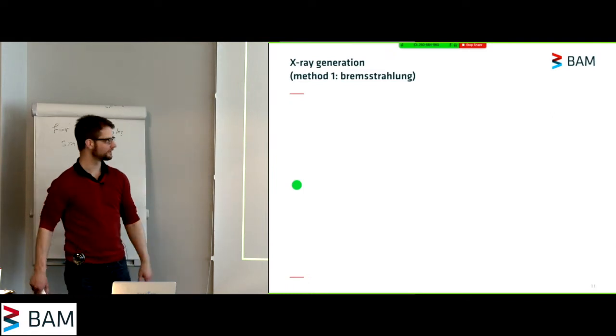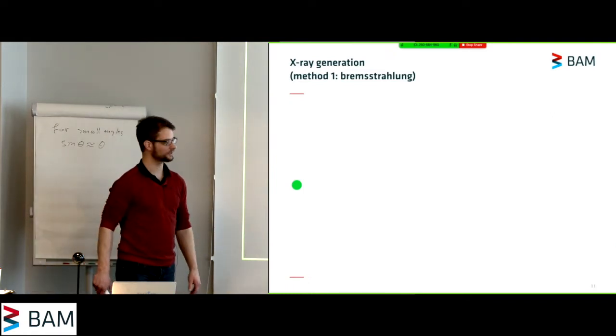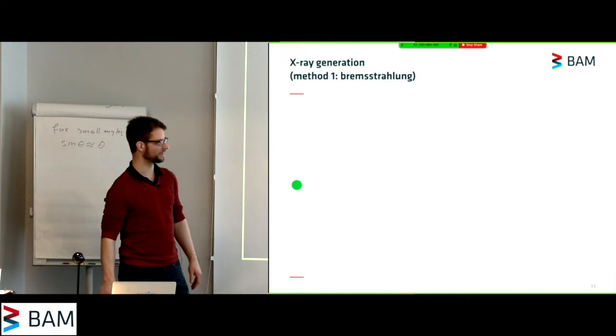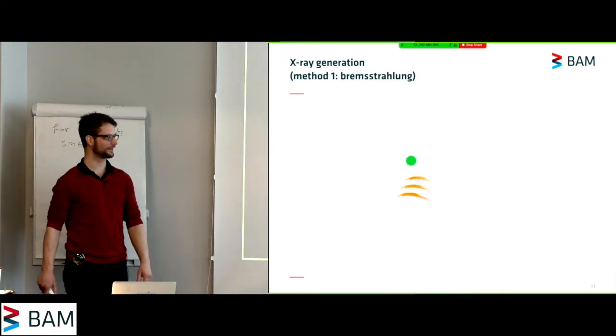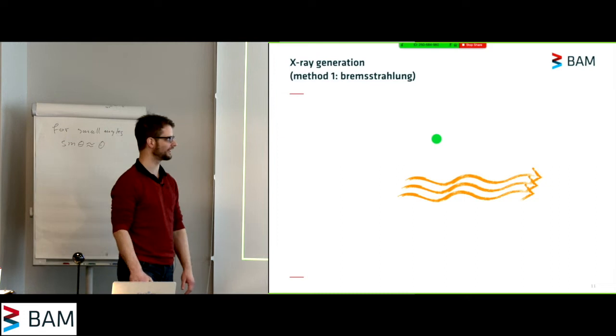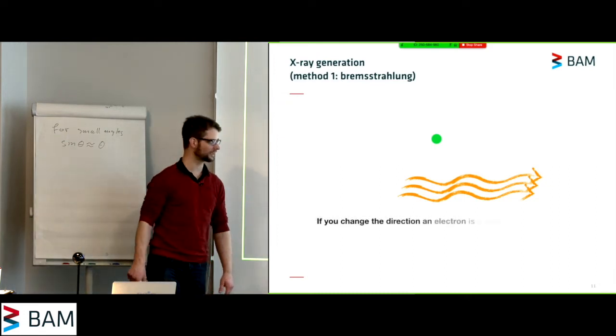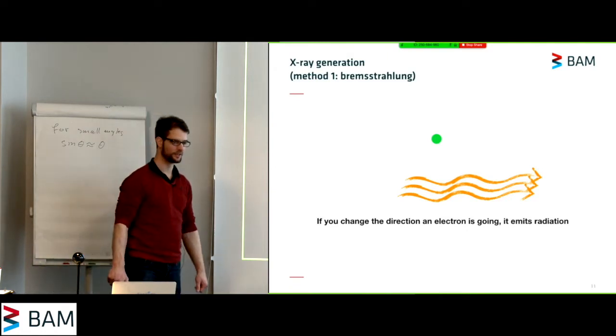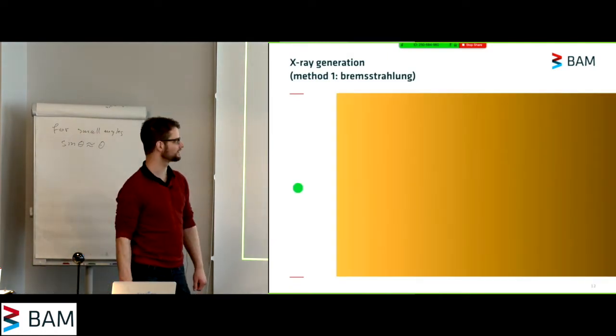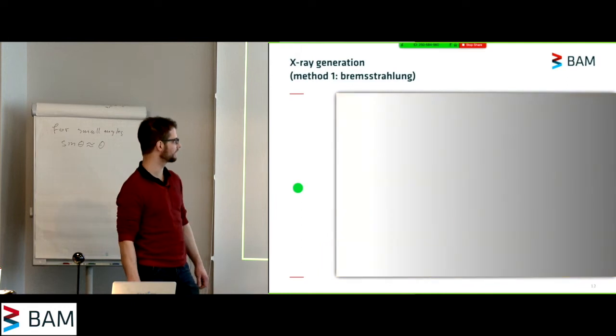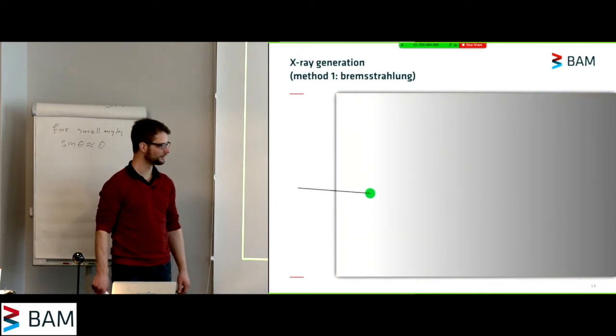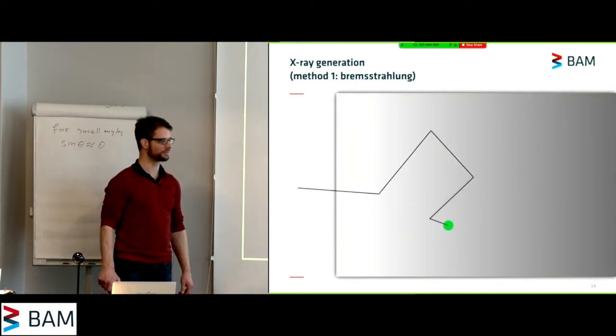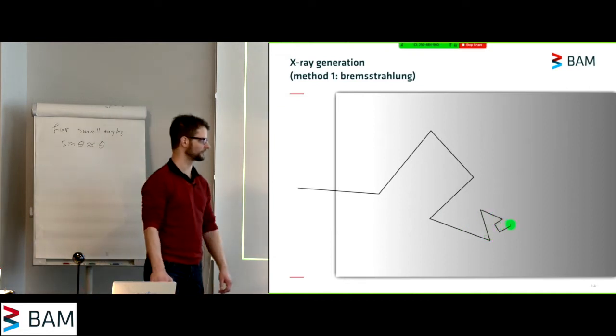Now, to understand why this generates x-rays for us, you should know that whenever you bend an electron or whenever you change the direction of an electron, you can generate an x-ray photon. So it emits radiation. So you see when this electron goes through the target along a particular path, at every one of these bending points it starts generating x-rays.